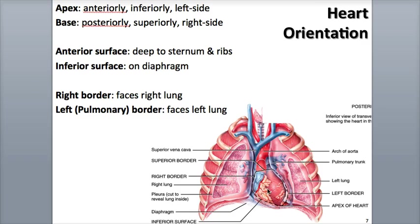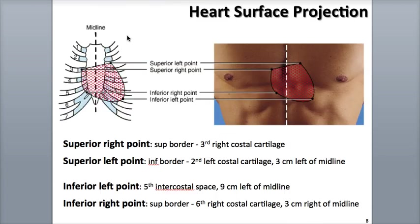The heart is a relatively small organ, about the size of an apple or your fist. It's about 5 inches long, 3 and a half inches wide, and 2 and a half inches thick, and weighs about 8 to 10 ounces. The heart sits on the diaphragm, the large dome-shaped muscle separating the thoracic and abdominal cavities. It is positioned close to the midline of the thoracic cavity, with about two-thirds of its mass to the left of the midline.